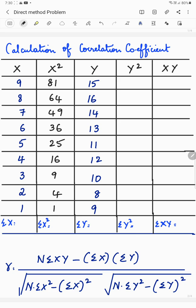Then you have y also taken directly from the table. y square is again 225, 16 16s are 256, 196, 169, 121, 144.